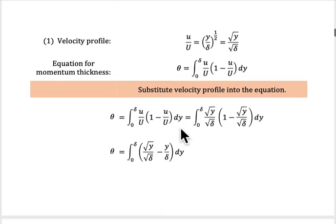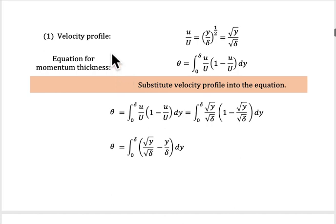And then again, for the velocity profile of y over delta by the power of 1 over 2, to make our calculation a little bit easier, I change this term into third y over third delta, and we need to calculate what is the value of momentum thickness. This is the equation for momentum thickness.